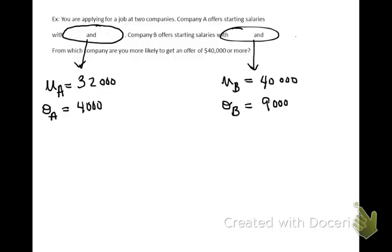For example, you are applying for a job at two companies. Company A offers starting salaries with an average of $32,000 and a standard deviation of $4,000. Company B offers starting salaries with an average of $32,000 and a standard deviation of $9,000. From which company are you more likely to get an offer of $40,000 or more? Right now, companies A and B are on two different scales — one a scale of $4,000 and the other $9,000. To put them on the same scale, we could form the z-score.